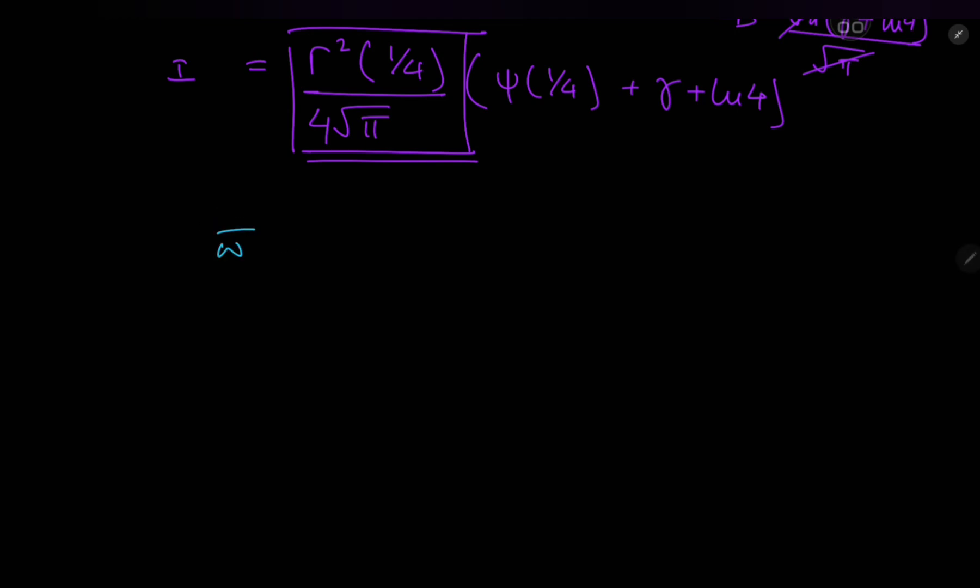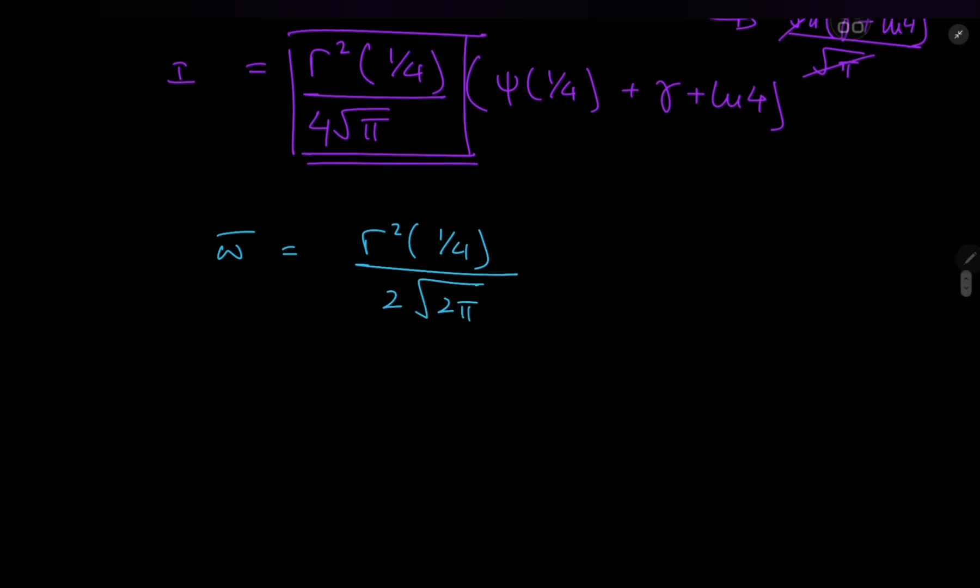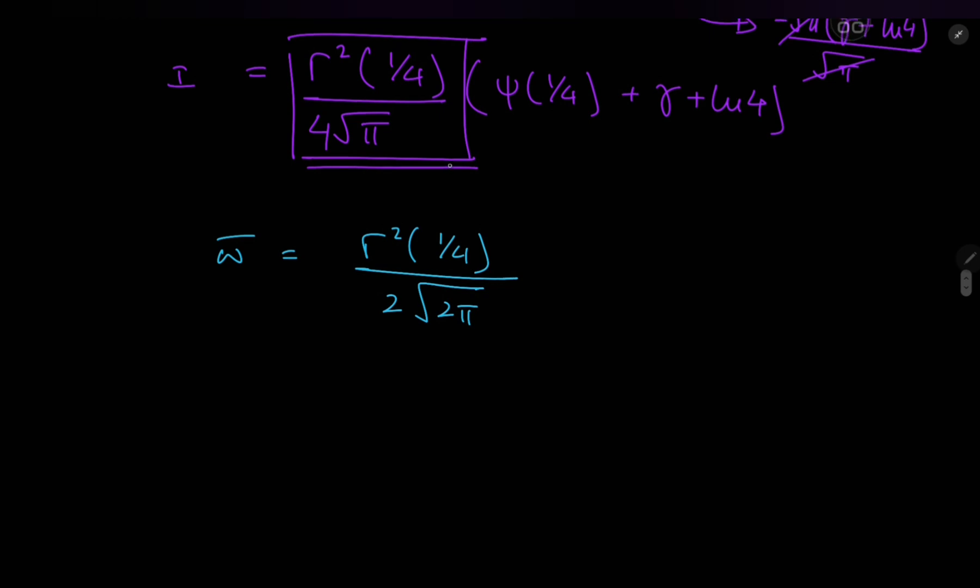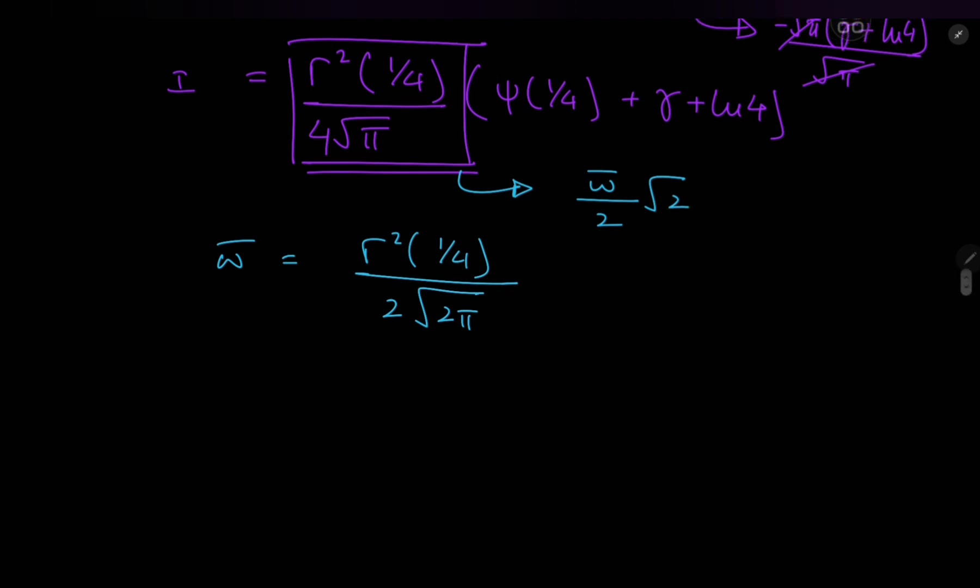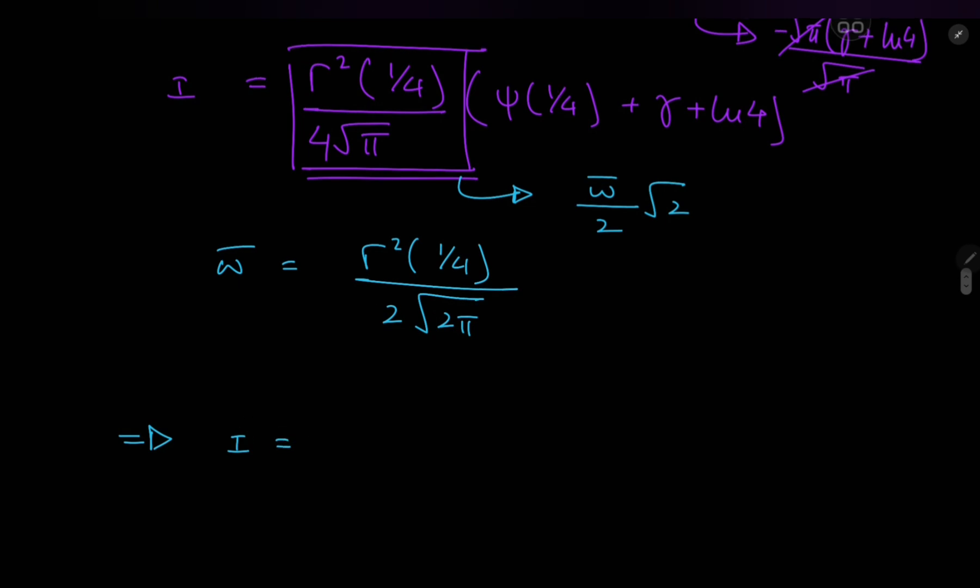I found the correct script this time. So, the Lemniscate constant, that's omega bar, is the square of the gamma function at a quarter, divided by twice the square root of 2 times pi. So, here, what we'll have is, in fact, the Lemniscate constant, divided by 2 times root 2. That's pretty much it.